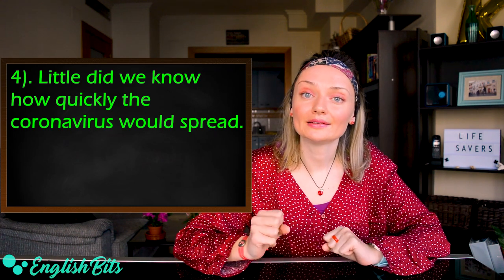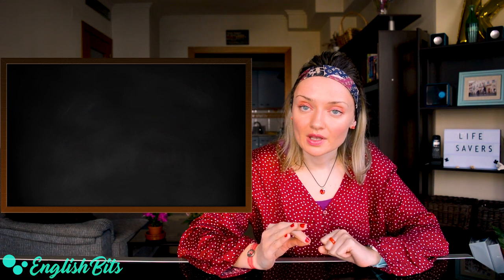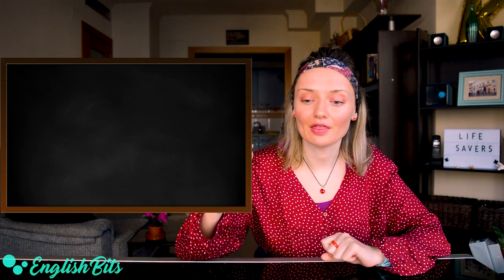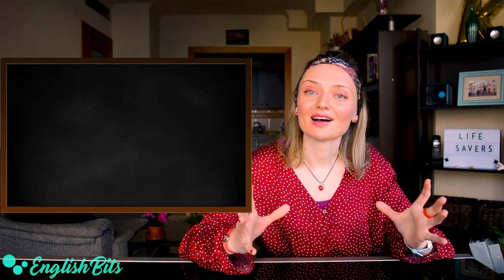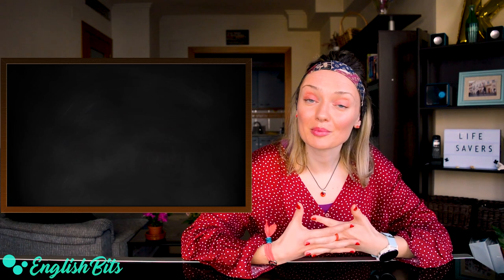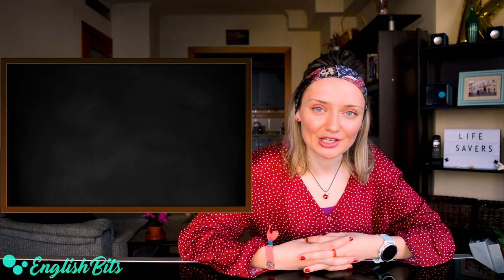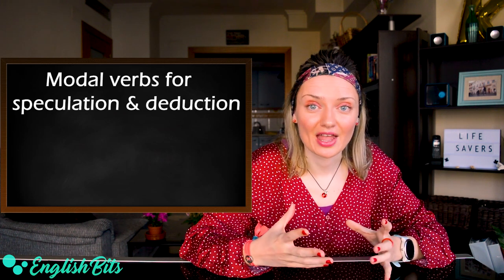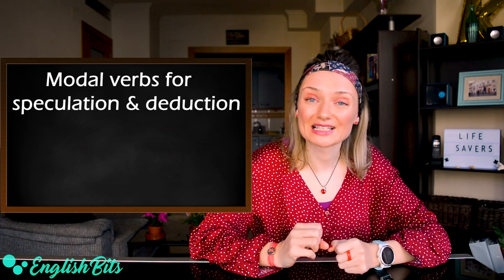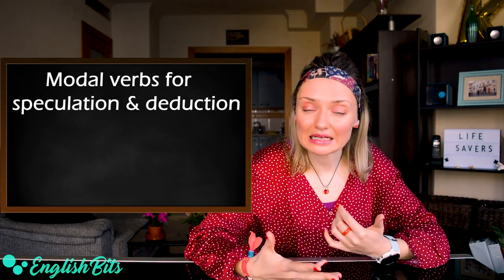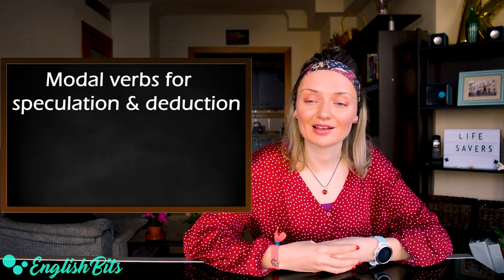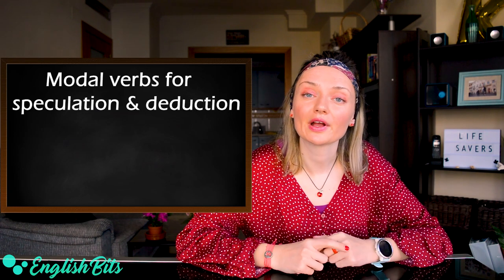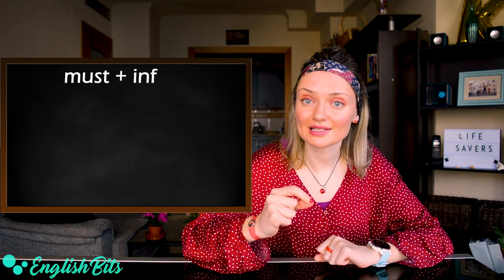I'm thinking of making an English video focused on inversion in order to explain it in more detail — if you're interested let me know in the comments below. And last but not least, grammar structure number five that I recommend using is modal verbs for speculation and deduction. It's especially useful for speaking part two when you have to speak about two pictures and you need to deduce and speculate.